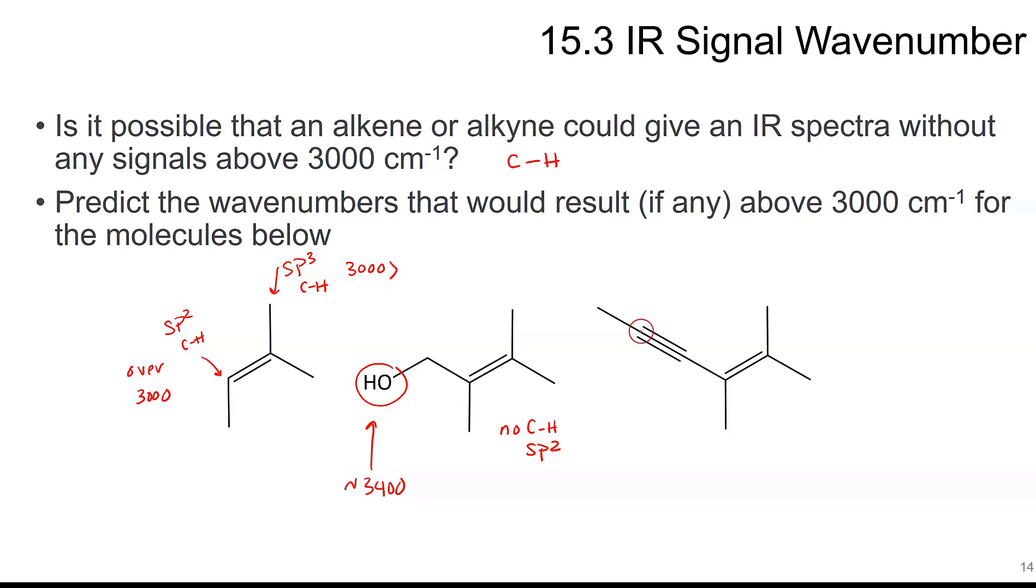This compound, however, is not going to have any CHs that are SP2, but we will see this OH that is around 3400. This has the SP, so if we had an H on there, that would show up above 3000. But there's no hydrogens here, so there's no SP CHs and the same with the SP2, no SP2 CHs.